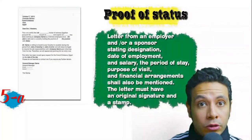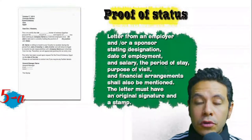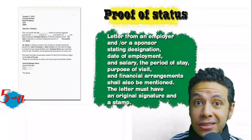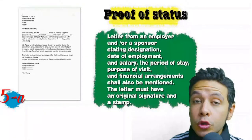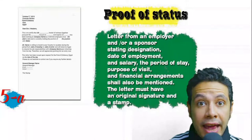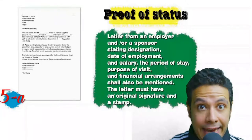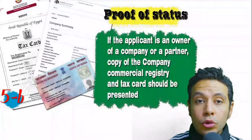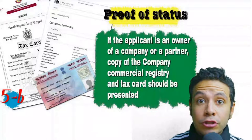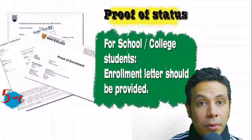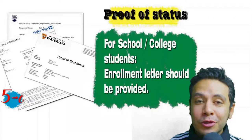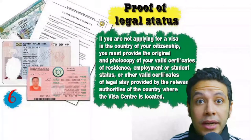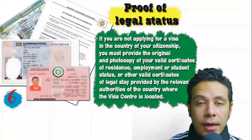In most visa application processes you will need to provide a proof of status. If you are an employee, provide a letter from your employer or HR department mentioning your name, work details, salary, address, and contact numbers. All letters must have an original signature and stamp. If you own a business, your commercial registry and tax card must be presented.